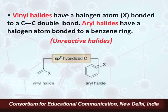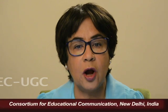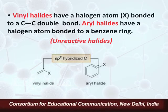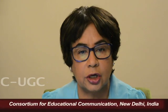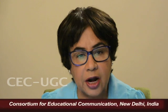In vinyl halides and aryl halides, the carbon to which the halogen atom is attached is sp2 hybridized. Since the halogen has a lone pair of electrons and the carbon bearing this halogen is sp2 hybridized, there is conjugation between the lone pair of electrons and the pi bond. These compounds undergo resonance, as a result of which they are unreactive towards nucleophilic substitution reactions.